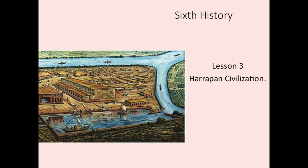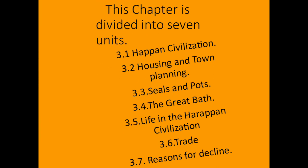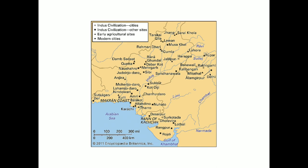Good day students, myself Miss Clara, your history teacher. Let's begin sixth grade History Lesson 3: The Harappan Civilization. This chapter is divided into seven units: 3.1 Harappan Civilization, 3.2 Housing and Town Planning, 3.3 Seals and Pots, 3.4 The Great Bath, 3.5 Life in the Harappan Civilization, 3.6 Trade, and 3.7 The Reason for the Decline.